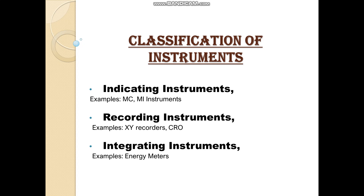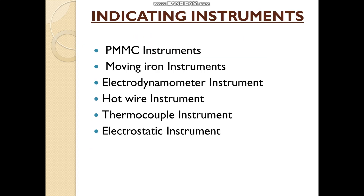Here we classify instruments into three categories: indicating, recording, and integrating. Let us look at them one by one. Indicating instruments can be classified based on the measurement quantity. We have six classifications: PMMC, moving iron, electrodynamometer, hot wire, thermocouple, and electrostatic. Let us look at them one by one.